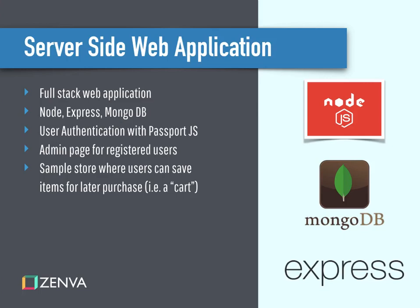It's going to incorporate much of the content and concepts from the previous two courses of this sequence such as Node, Express, MongoDB, and things of that sort. We're going to take it a step further and add a few new features such as user authentication using a package library called Passport JS, which is a pretty widely used library for user authentication and maintaining login state.